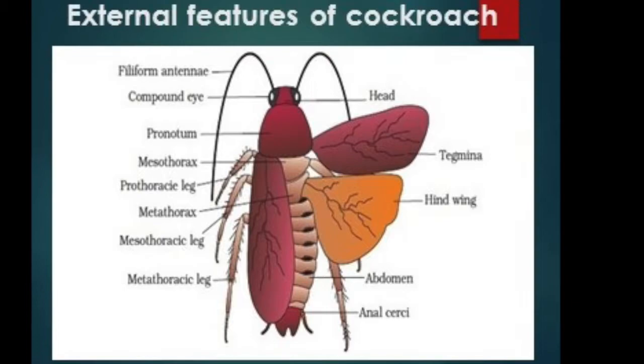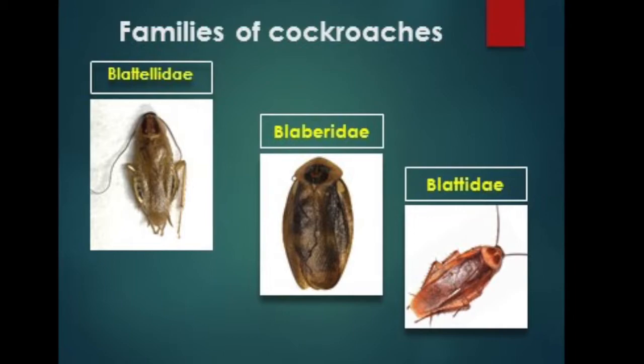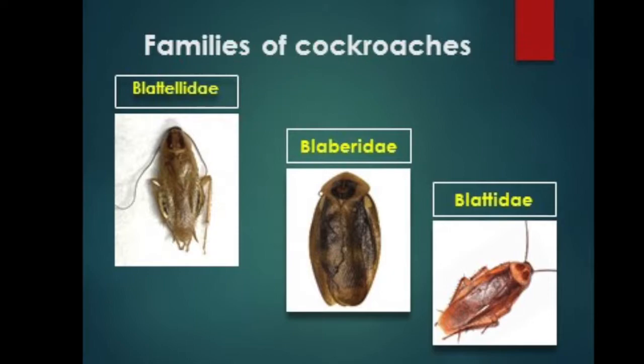The head is entirely concealed behind a pronotal shield, with leathery wings, long antennae, thread-like long legs, and abdominal cerci usually long. There are three families of cockroaches: Blattellidae, Blaberidae, and Blatidae.